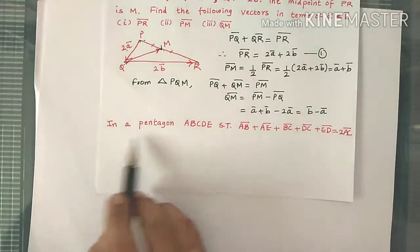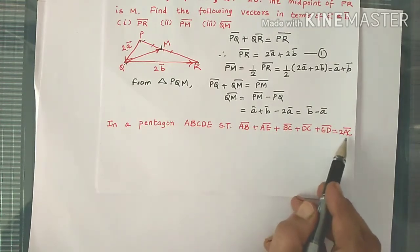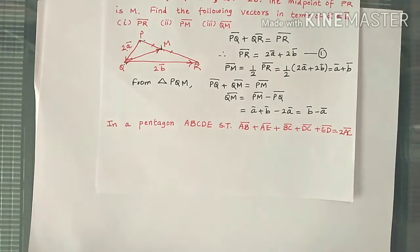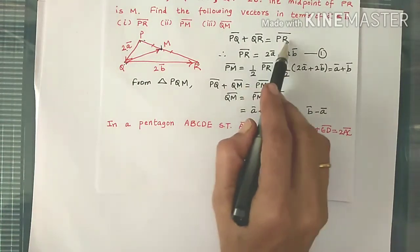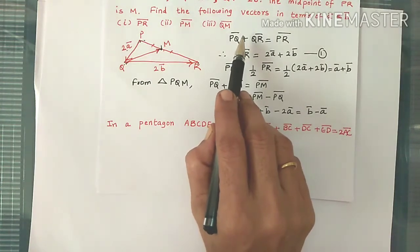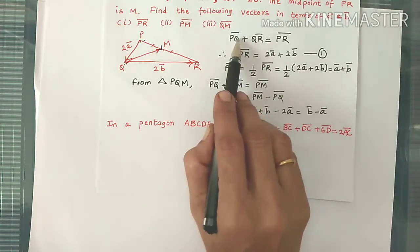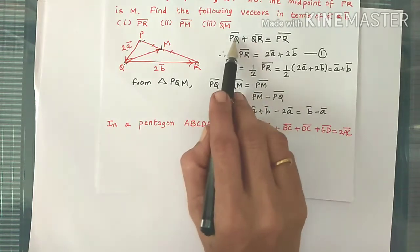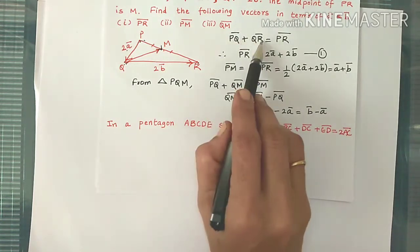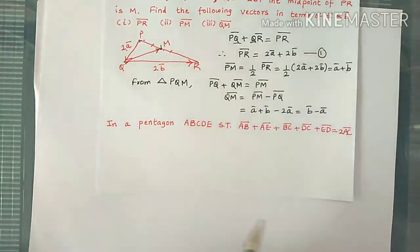Next question: in a pentagon ABCDE, show that AB bar plus AE bar plus BC bar plus DC bar plus AD bar equals 2AC bar. Let's solve this without using a diagram. By triangle law of addition, PQ bar plus QR bar equals PR bar. To use triangle law of addition, the final point of the first vector should be the initial point of the second vector — we cancel the common point and write it as PR bar.